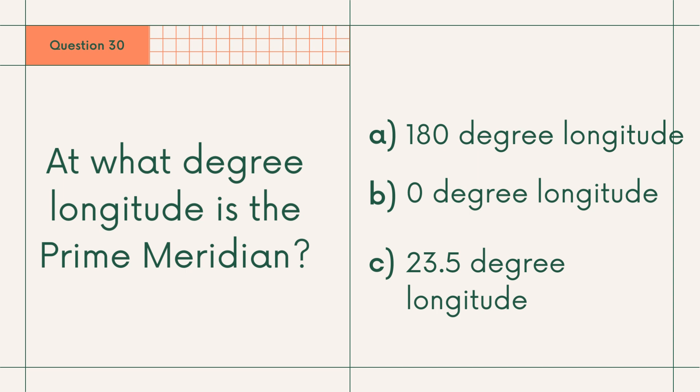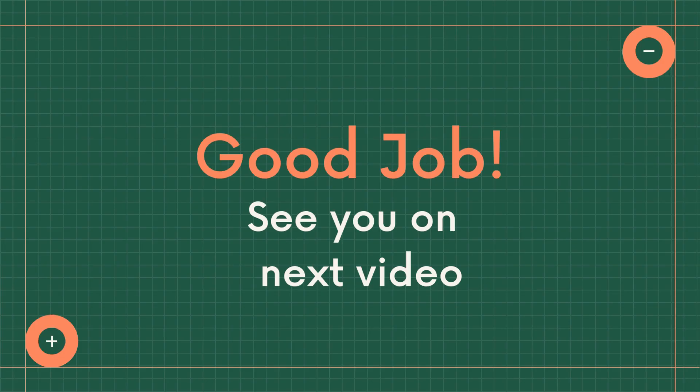Last question — Question 30: At what degree longitude is the prime meridian? A. 180 degree longitude, B. Zero degree longitude, or C. 23.5 degree longitude. Answer: B. Zero degree longitude. So that's it for today, see you in the next video. Keep watching, thank you.